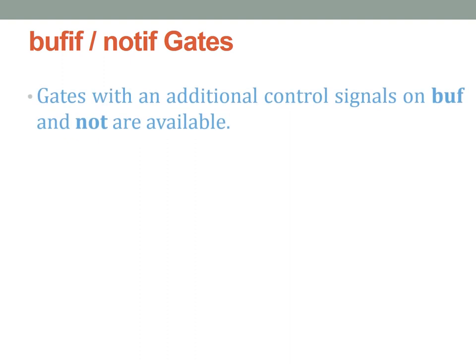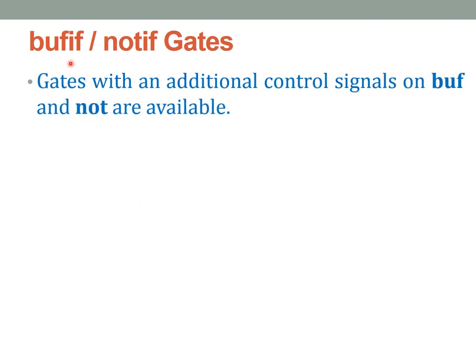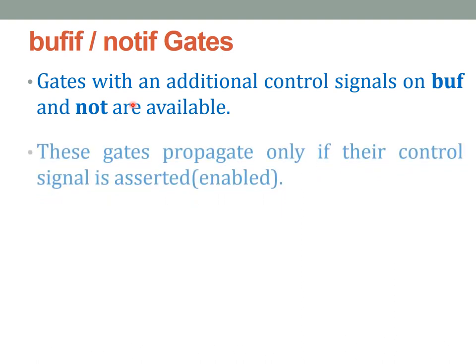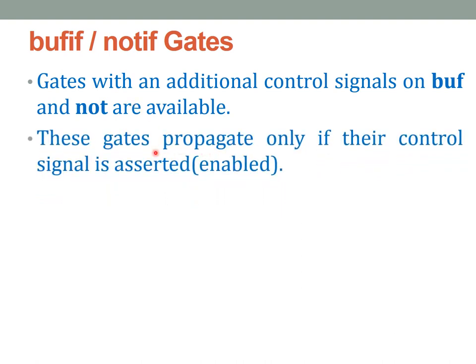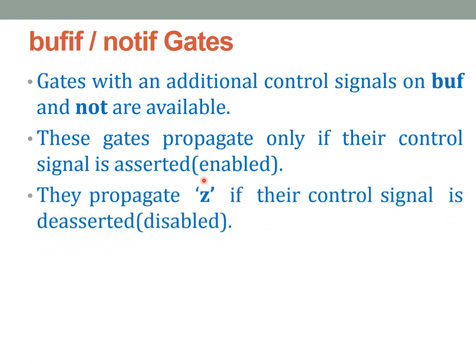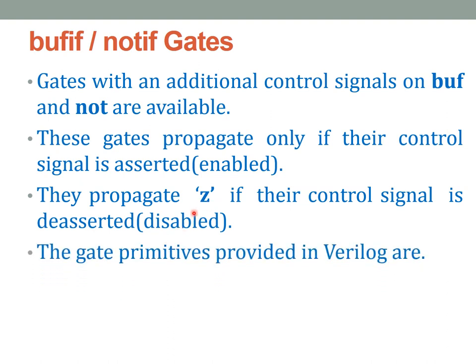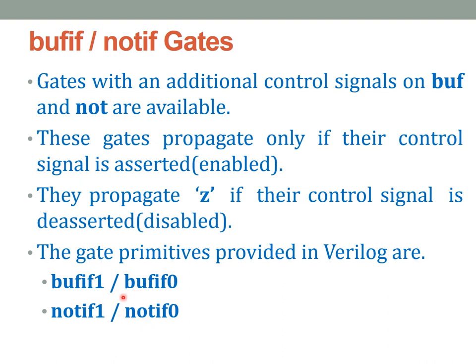We have one more class of gates under the buffer and not gates known as the buff-if and not-if gates. These are gates with an additional control signal. These gates propagate or function only if their control signal is enabled. If the control signal is enabled, the buffer or not gate functions normally. Otherwise, if the control signal is disabled, the output will be a high impedance state. The gate primitives in Verilog are: buff-if1, buff-if0, not-if1, and not-if0.